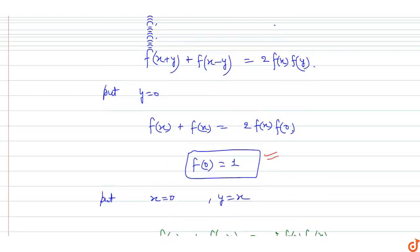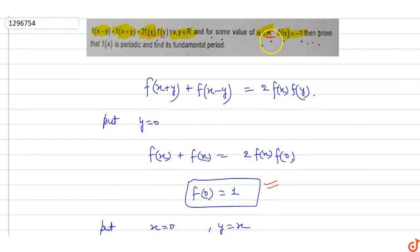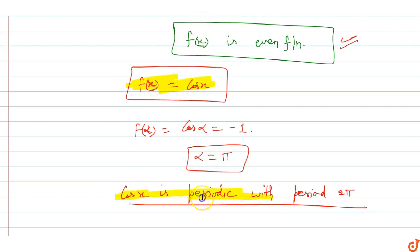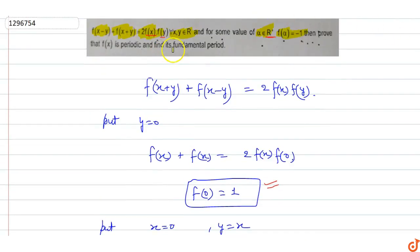Since α belongs to R+ (positive real numbers), we prove that f(x) is periodic. We know that cos(x) is periodic with period 2π. Therefore, function f(x) = cos(x) is periodic with fundamental period 2π. This is the answer for this question.